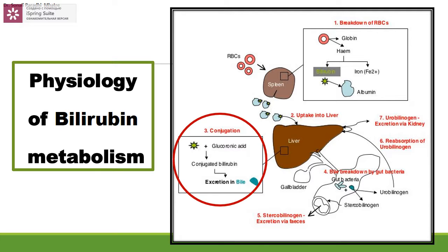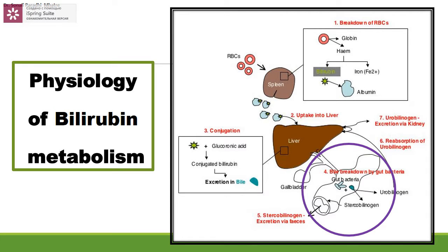After conjugation, bile goes into the duodenum where gut bacteria degrade it to urobilinogen and stercobilinogen. Stercobilinogen is excreted via feces, while urobilinogen is excreted via the kidneys. Some urobilinogen is reabsorbed — this is the enterohepatic circulation. If bile stagnates in the intestine longer, there will be greater uptake into the bloodstream, resulting in indirect jaundice.